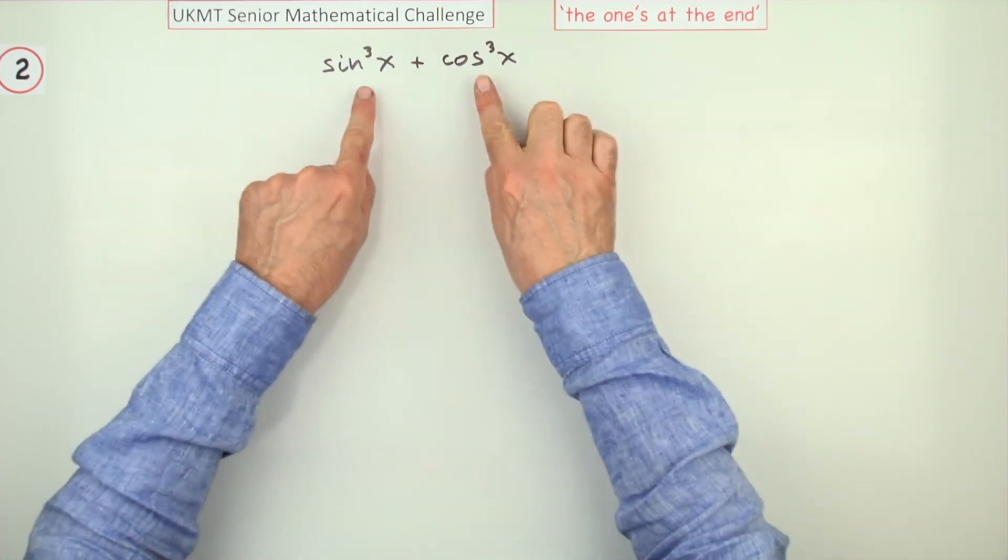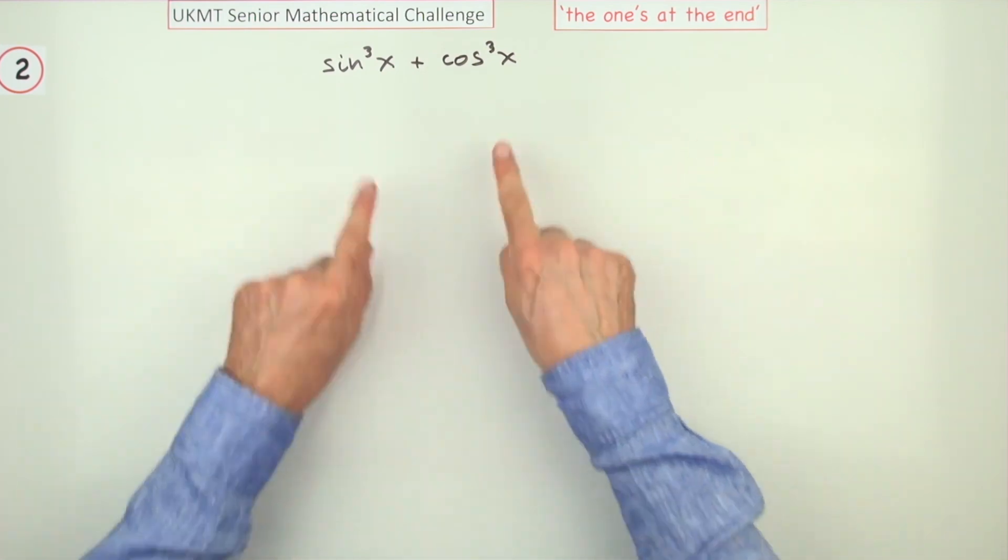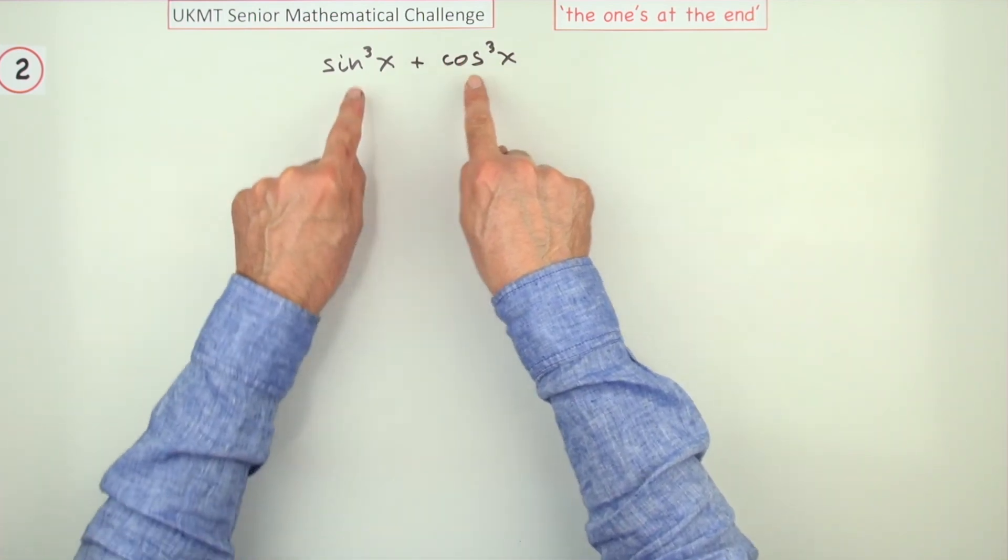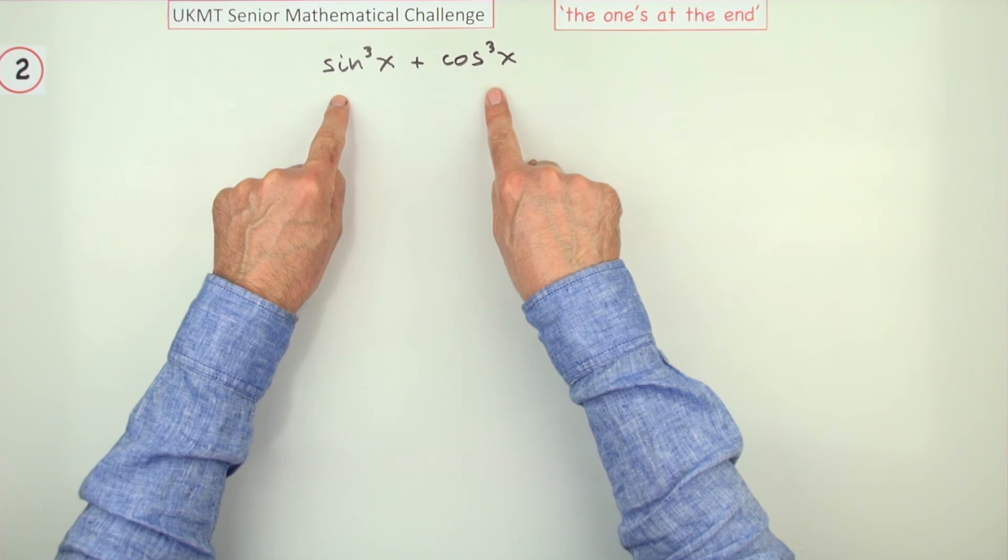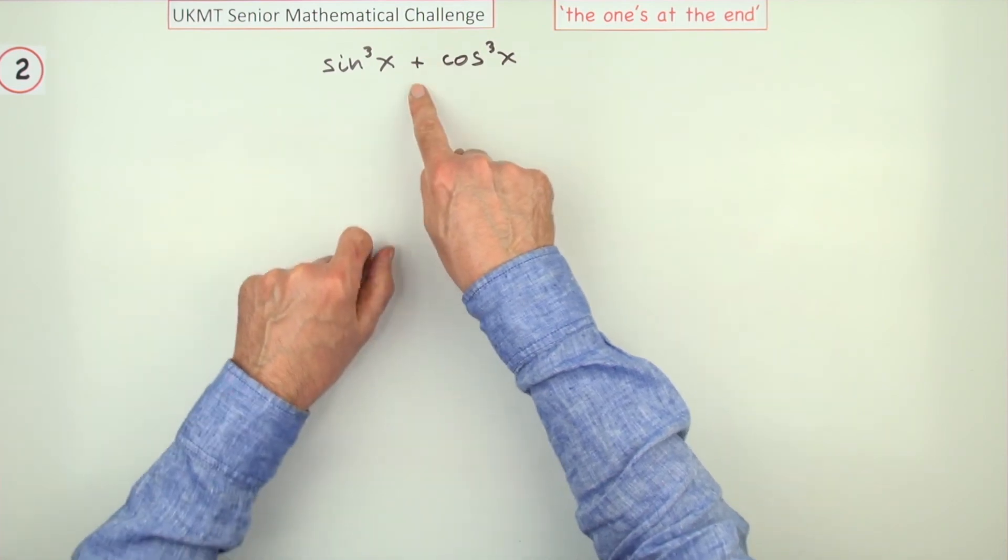So looking at this with your new glasses on, you'd say wait, I've got the sum of two cubes. So you can use the pattern for the factorization of the sum of two cubes.